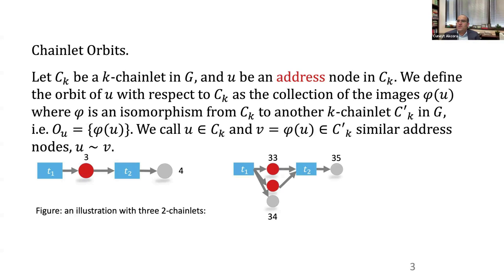You will look at these addresses. On the left, I am showing you a two-chainlet — we call it a two-chainlet because there are two transactions in it. In theory, you could extend this to three-chainlets, four-chainlets, and so on. If an address appears in a role between transactions one and two, that role tells us something. For example, looking at the left two-chainlet, the address marked with ID three is probably an interim address used to move money from one address to another.